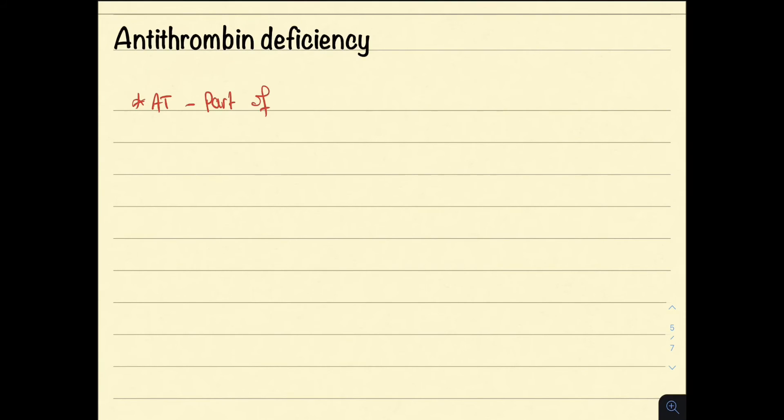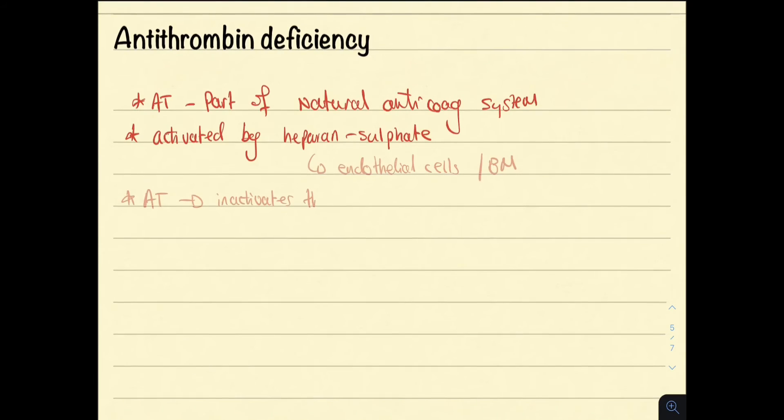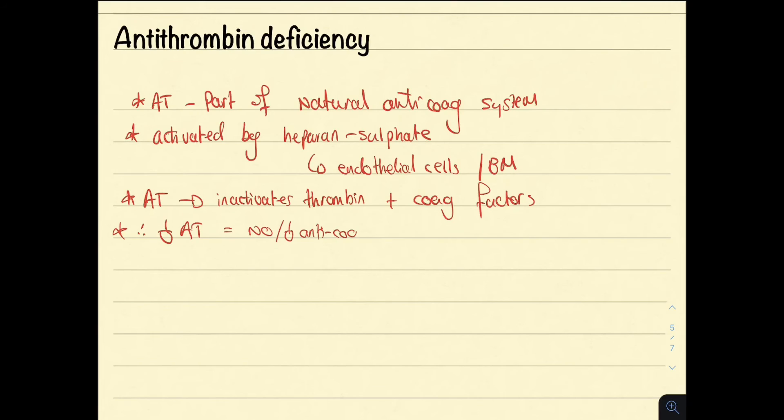First, we have antithrombin deficiency. Remember, antithrombin is part of the natural anticoagulation system. It is activated by heparan sulfate on the endothelial cells and basement membrane. Antithrombin functions by inactivating thrombin and coagulation factors. Therefore, a deficiency means there is no regulation of the coagulation cascade.